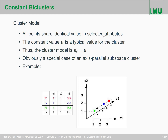The first type is constant bi-clusters — the most simplistic model. All values share identical values in the selected attributes: all points and all features should be identical. The constant value mu is the typical value for that cluster. So the cluster model is very simple: all values in the respective rows and columns are just that same specific typical value.